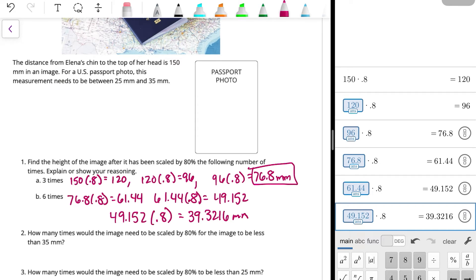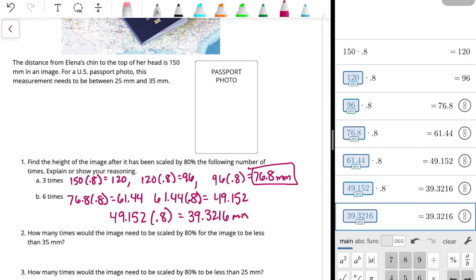And so six times is not going to work. So let's try a seventh time. All right. So we're going to take that answer and multiply by 0.8, and that will work. So seven times will work.